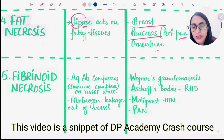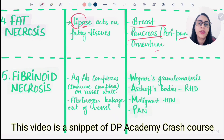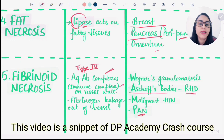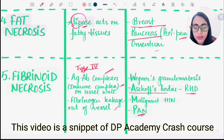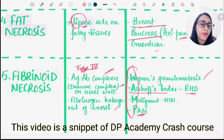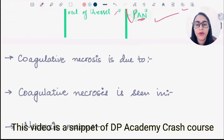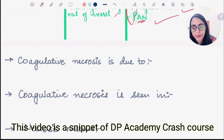Fibrinoid necrosis is seen when immune complexes deposit on vessel walls. Fibrin is formed in the vessels, as seen with Aschoff bodies in rheumatic heart disease or in polyarteritis nodosa. These are examples of type 3 hypersensitivity — antigen-antibody complex. Fibrinogen leaks out of vessels. You can remember examples using the mnemonic VAMP: Wegener's granulomatosis, Aschoff bodies, malignant hypertension, and polyarteritis nodosa.